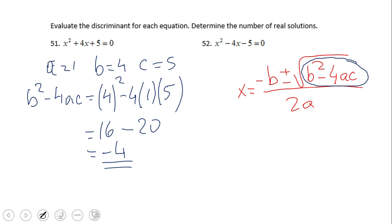Whenever the discriminant is negative, like this one, then we say that we have no real solution.